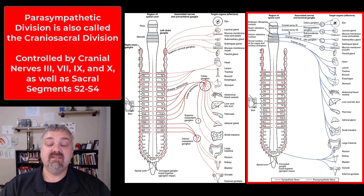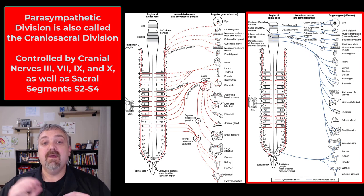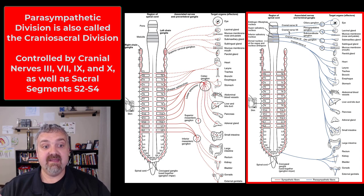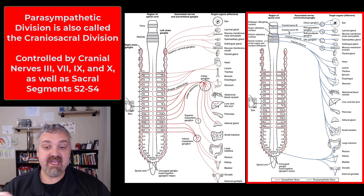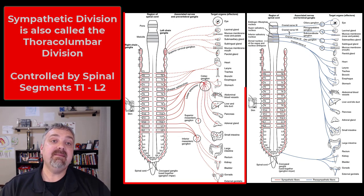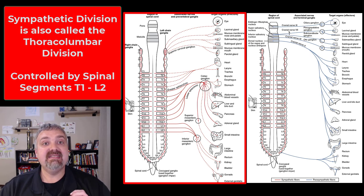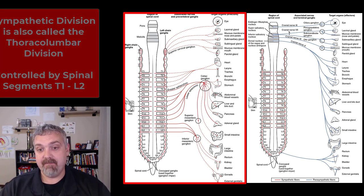Looking at the basic differences as far as where the names come from: the parasympathetic division is called the craniosacral division because it's controlled by cranial nerves 3, 7, 9, and 10 — which you can see at the top of that image on the right — and by sacral segments S2 to S4. The sympathetic nervous system is called the thoracolumbar division because it's controlled by spinal segments T1 to L2. So that's another key anatomical difference: where this information is coming from.